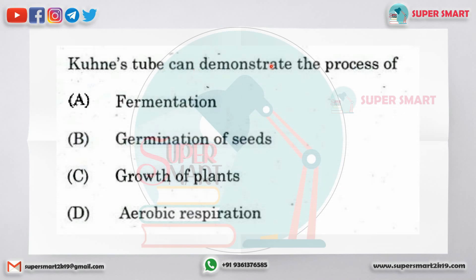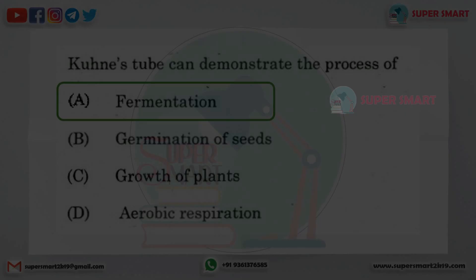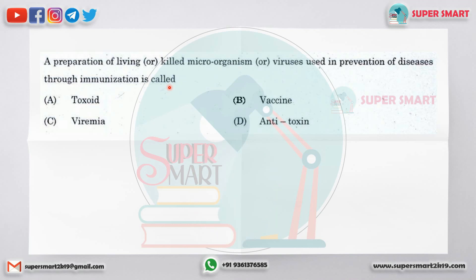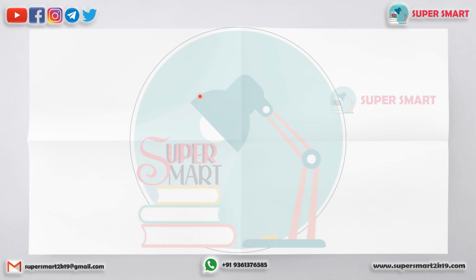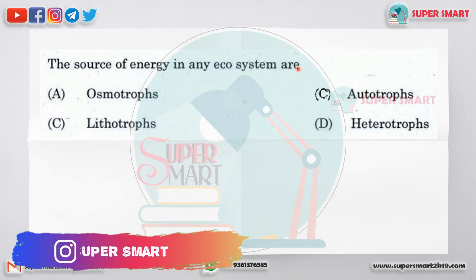Hoogne's tube can demonstrate the process of dash — the answer is fermentation. The preparation of living or killed microorganisms or viruses used in prevention of diseases through immunization is called dash — the answer is vaccine. The source of energy in any ecosystem is dash — the answer is autotrophs.